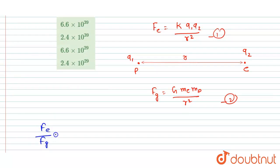It will be equals to, so you can see r square will get cancelled out, so k q₁ q₂ over G mass of electron into mass of proton. Now you could put the value, so k is 9 × 10⁹.